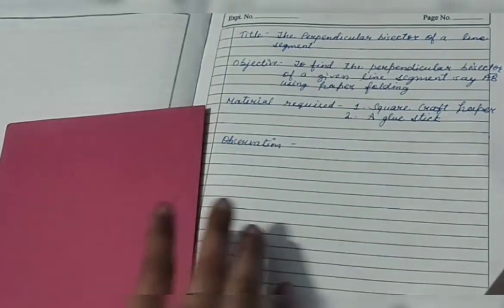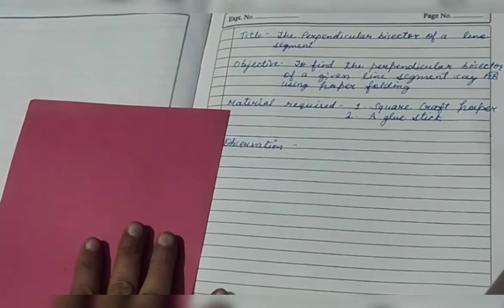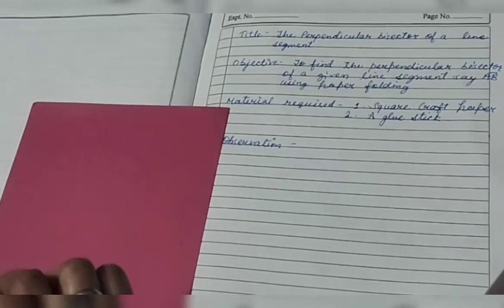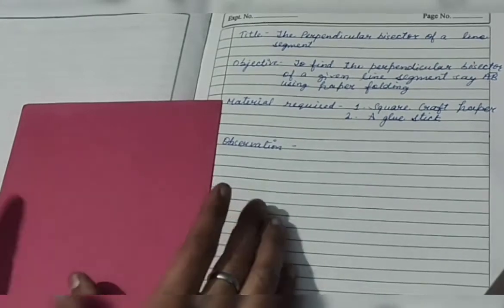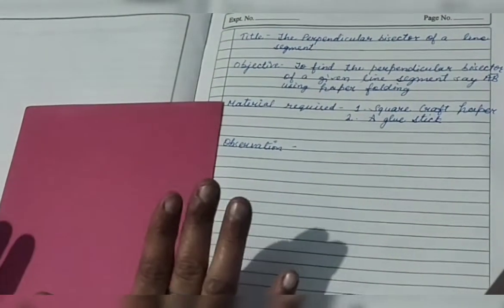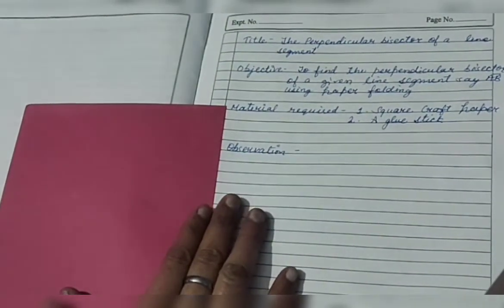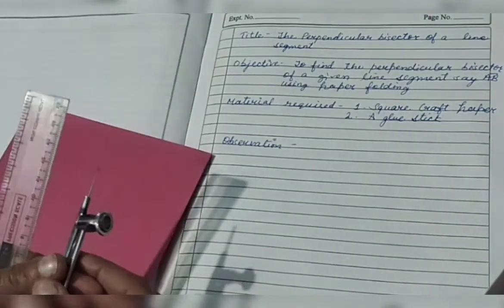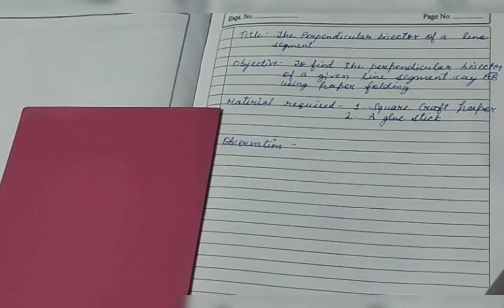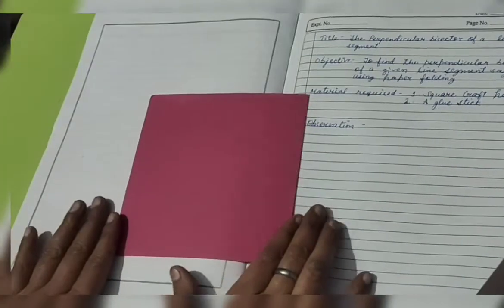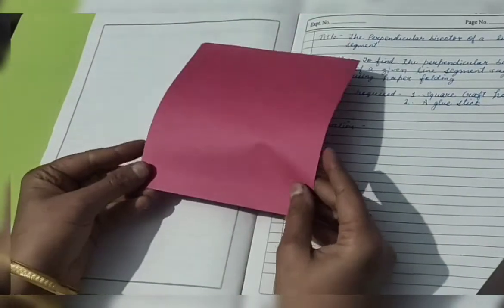Not going to draw actually, we're just going to find the perpendicular bisector of a line segment without any compass, without any ruler. Not going to use these, and we can definitely find it. So let's start. First of all, you just take a paper like I have a square craft paper.